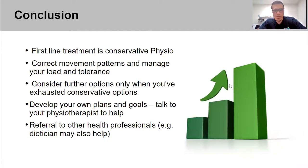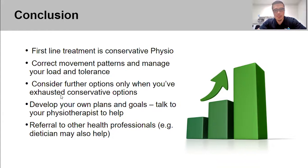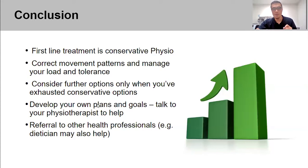In conclusion: conservative treatment is always the best first option. Once you've corrected movement patterns and managed your load, your tolerance improves and many more options open up. If conservative measures have been exhausted, we can assist with onward referral coordinated with your doctor — potentially a dietitian for nutrition and weight loss, a specialist, or pain management services. Developing specific goals for your lifestyle and what makes you happy is really important.